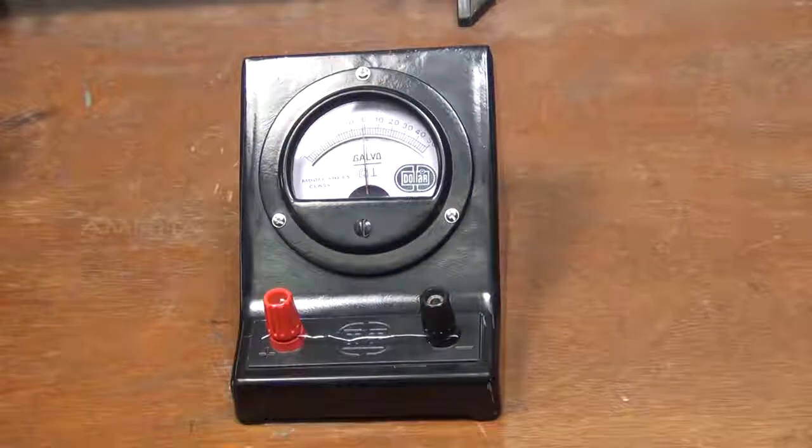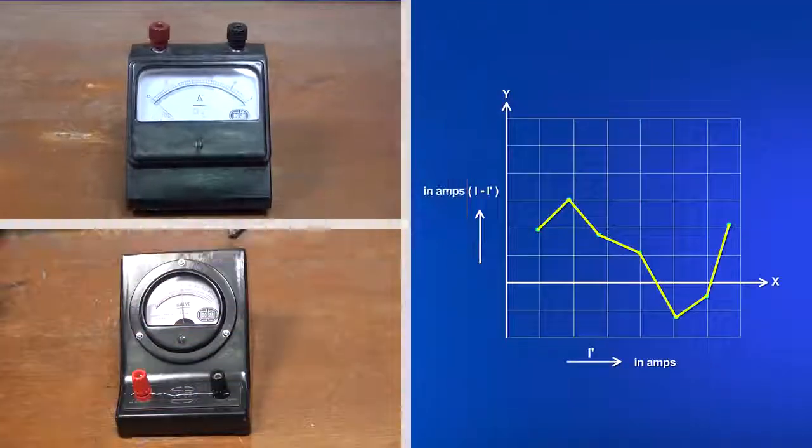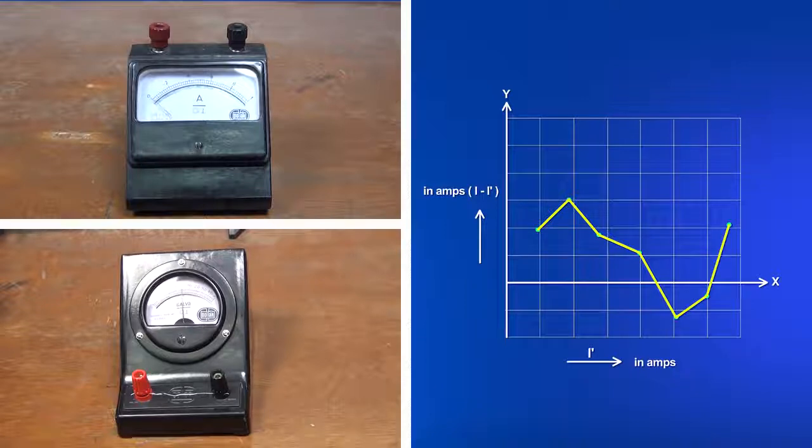Thus, the converted ammeter is verified with an ammeter of the same range and the correction graph is obtained.